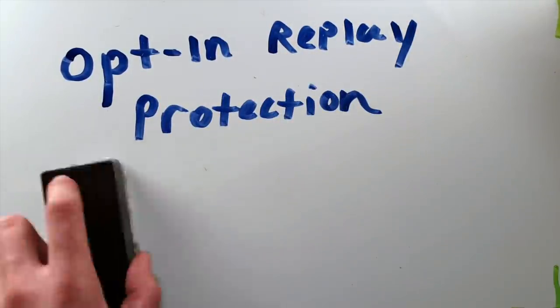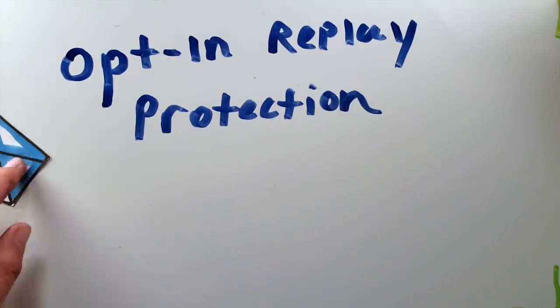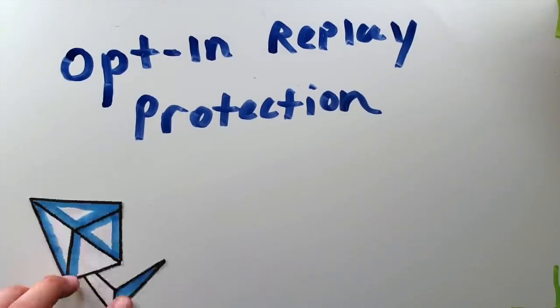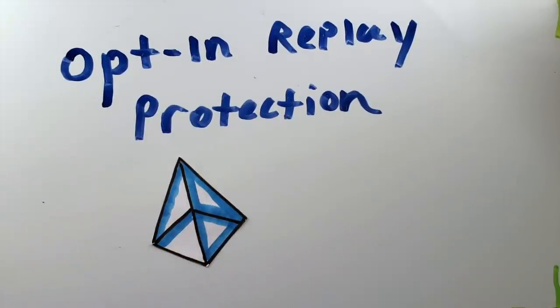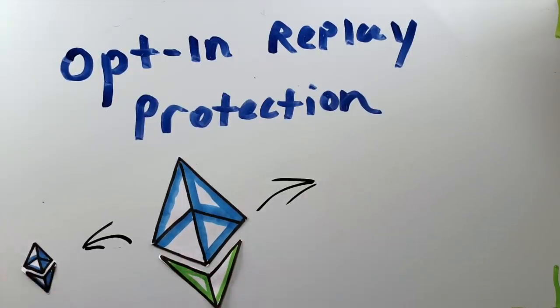So even without default replay protection, anyone can still split their coins by using some of the differences that split the chain in the first place. This allows people to move their coins independently of one another and allows for a lot more choice for the users. Splitting coins with this method is called opt-in replay protection.